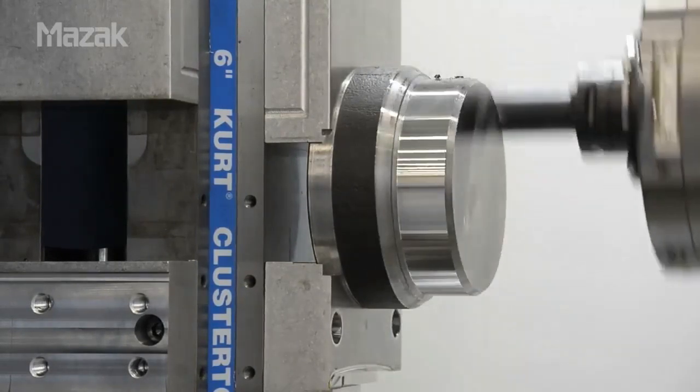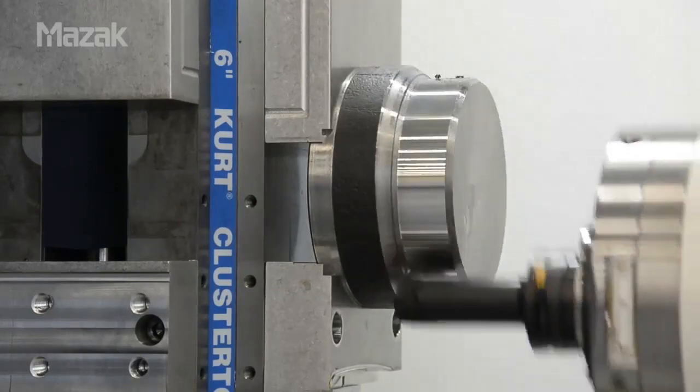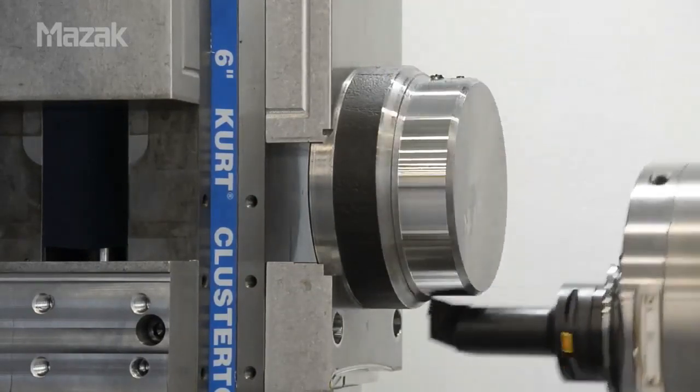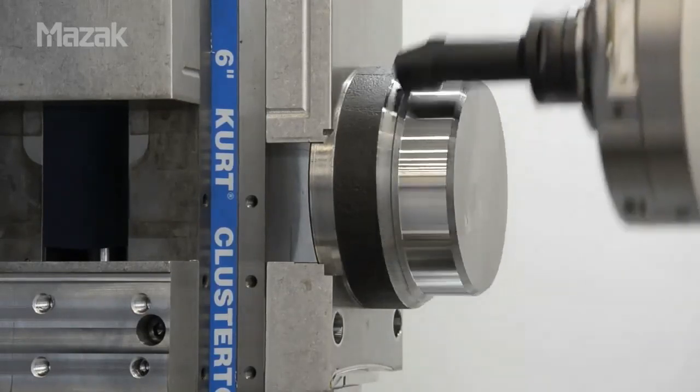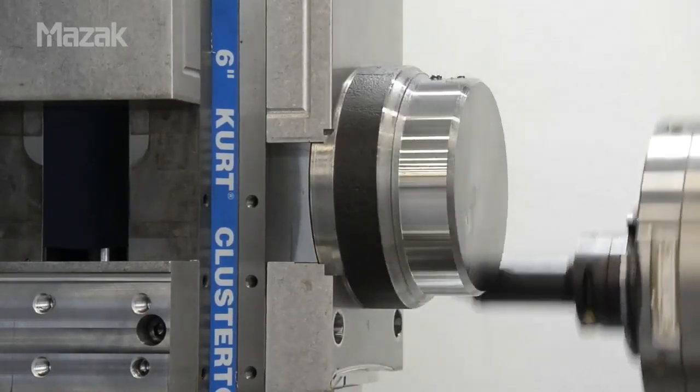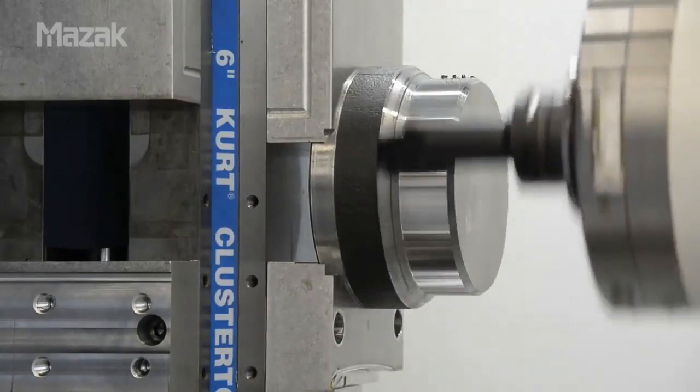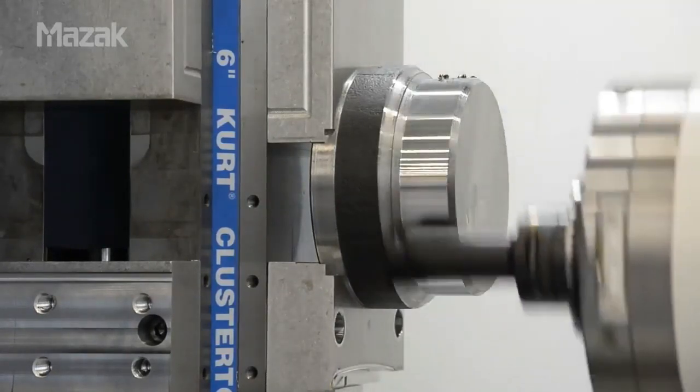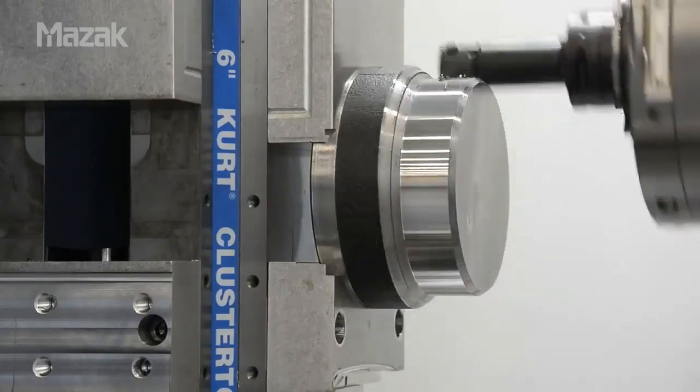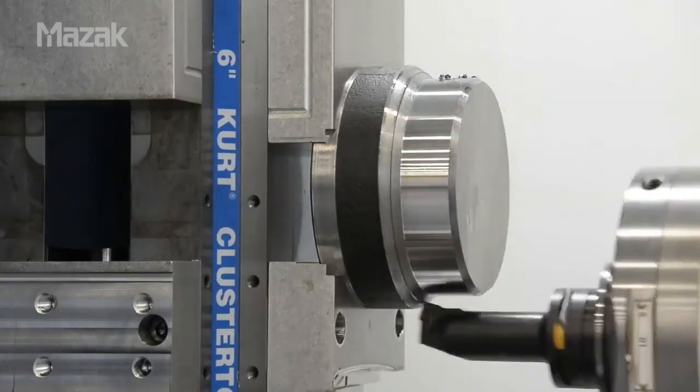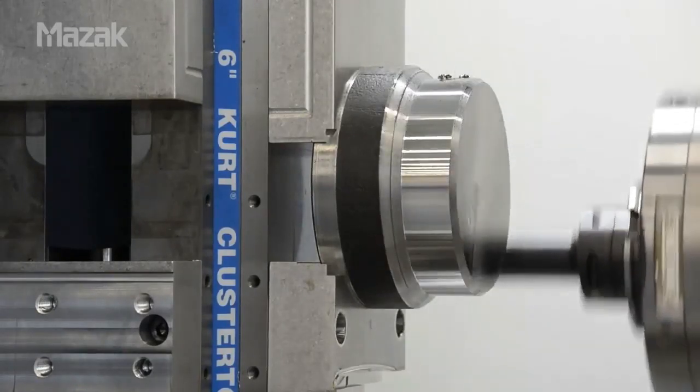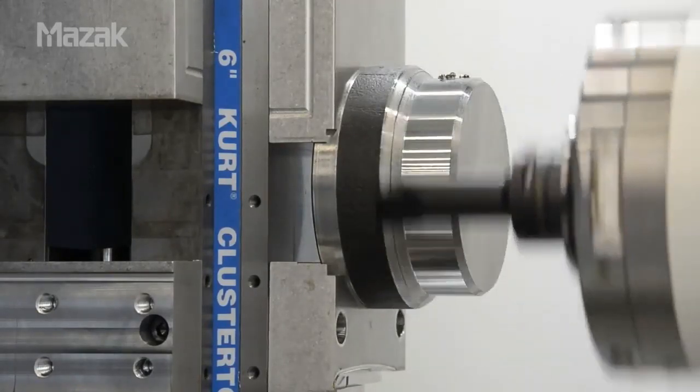Notice as the tool revolves around the part that the tool insert remains normal to the cutting surface. This synchronization of the spindle rotation relative to the interpolated X and Y axis movement is essentially the critical essence of orbit turning.